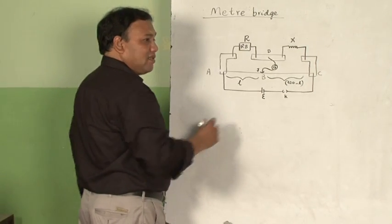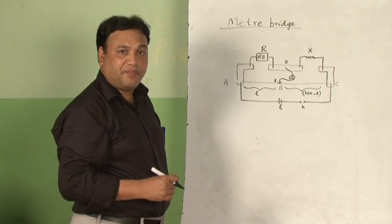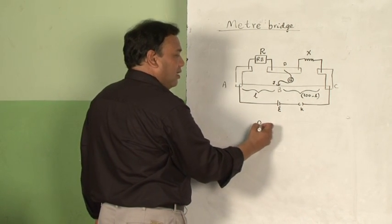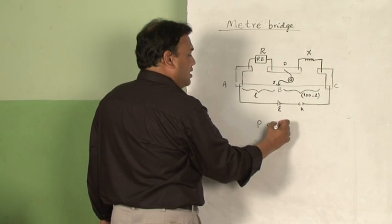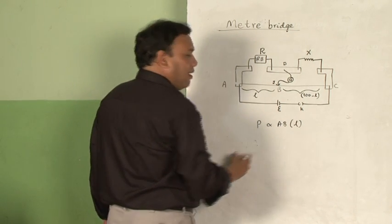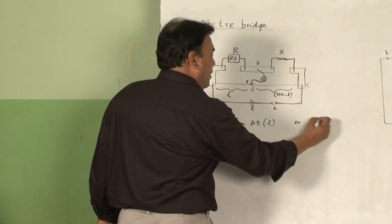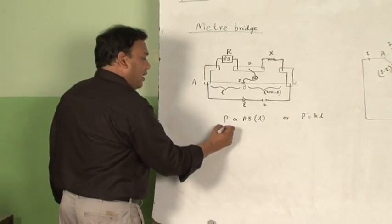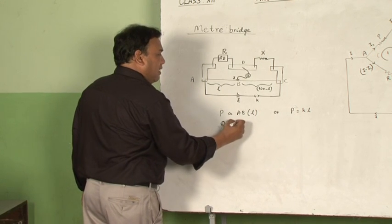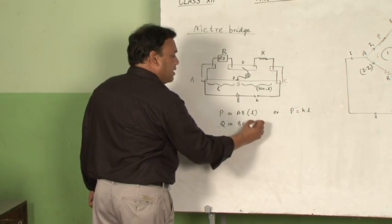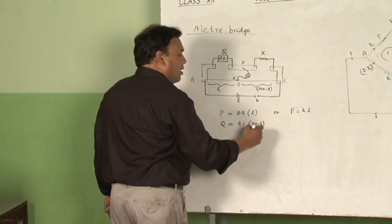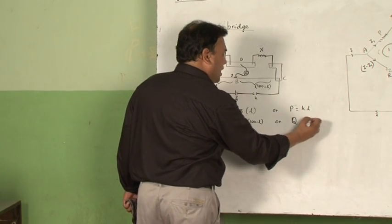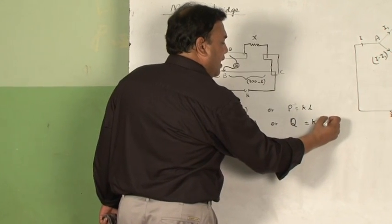According to the condition of balancing of the Wheatstone bridge, P by Q equals R by S. The resistance of the length L is equal to P, and it is directly proportional to the length AB, so P equals some constant K multiplied by L. Similarly, the resistance of the remaining wire Q is directly proportional to its length, which is 100 minus L, so Q equals K multiplied by (100 minus L).